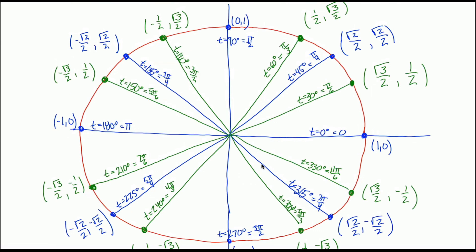My advice is to see if you can draw the unit circle all on your own — grab a piece of paper, put in 16 points, and figure out everything that goes around. Maybe even pretend you're teaching it to somebody else. Do that once, spend about 15 minutes on it, and it'll be very worth the time going forward because we'll need this over and over again in this class.